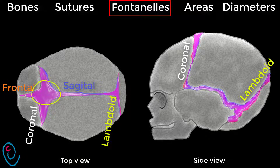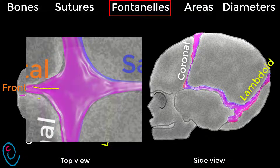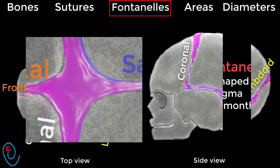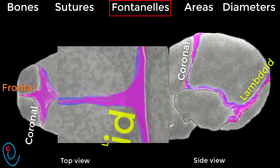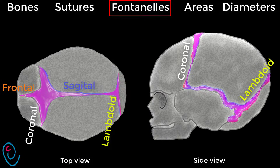Fontanels are wide gaps in suture lines that connect between different sutures. There are two important fontanels: anterior and posterior. The anterior fontanel connects the frontal suture anteriorly, the sagittal suture posteriorly, and the coronal sutures laterally. It has a diamond shape and is called the bregma. It ossifies at around 18 months after birth. The posterior fontanel is triangular in shape, connecting the sagittal suture anteriorly and lambdoid sutures laterally, and it becomes ossified at term. Some fontanels have no obstetric importance, such as the anterior inferior and posterior inferior fontanels.